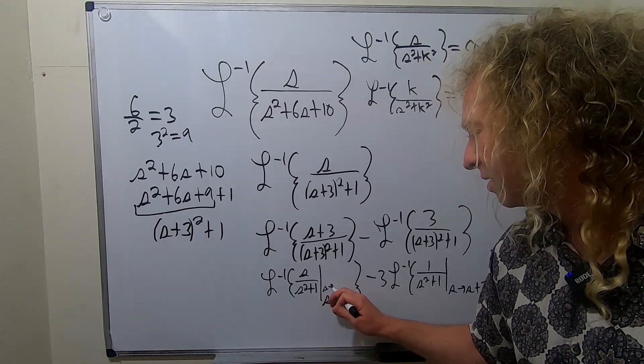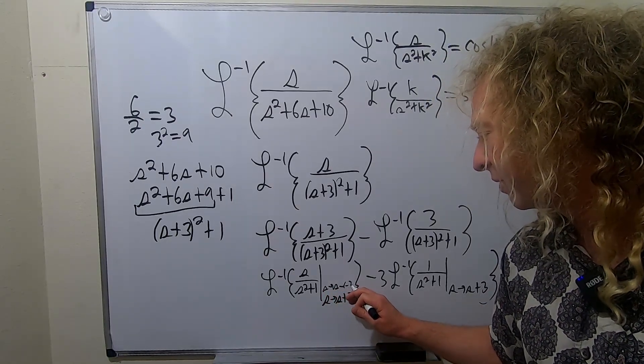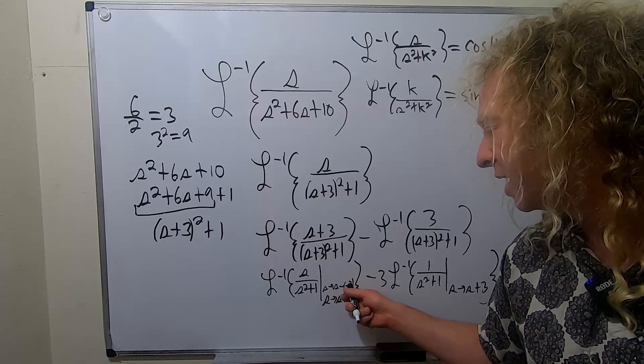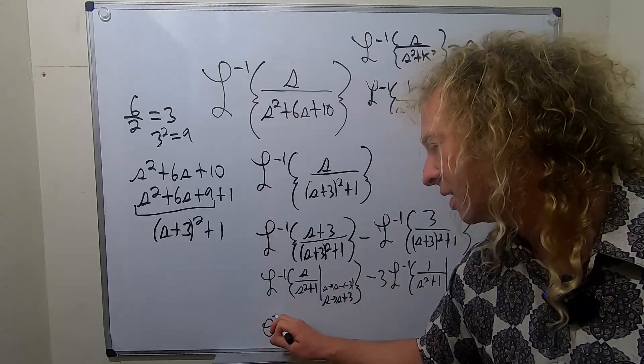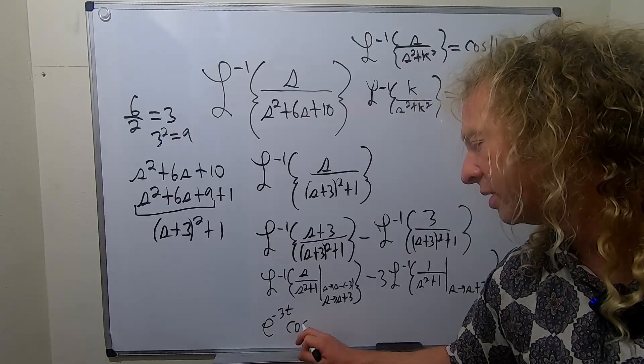Because you can think of it as s minus negative 3. So this will give you e to the negative 3t. So we get e to the negative 3t. And then cosine t.